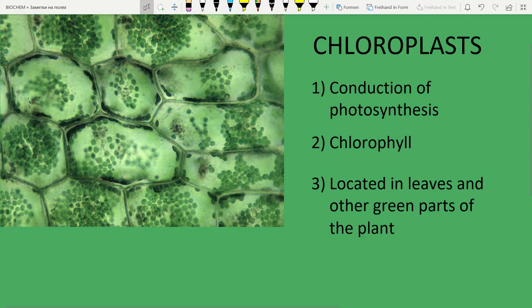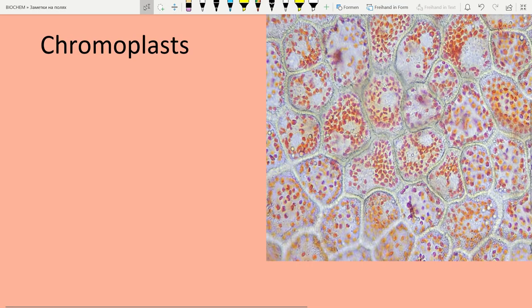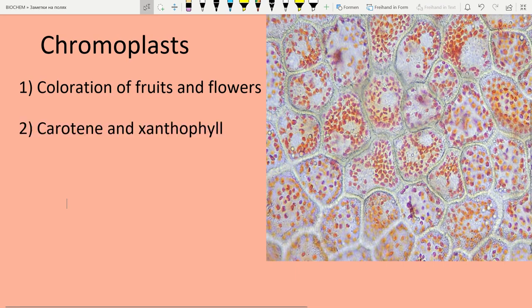Now we're ready to move to chromoplasts. They synthesize and store pigments such as xanthophyll and keratin, so they are responsible for the coloration of fruits and flowers.